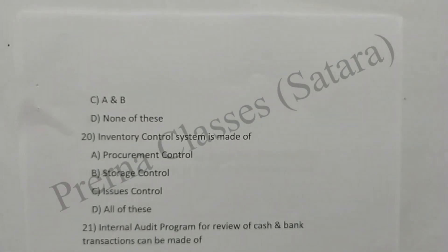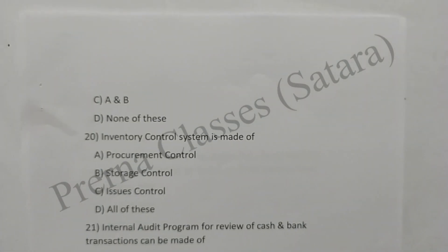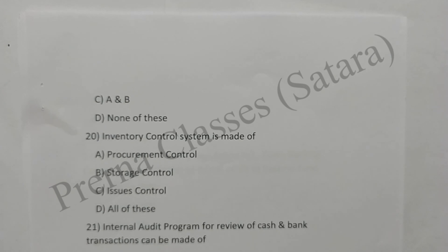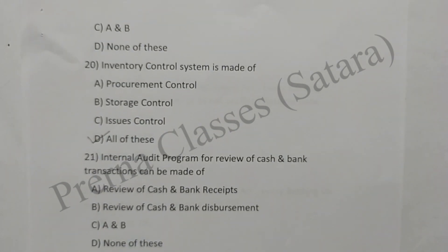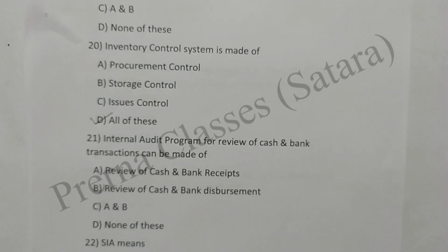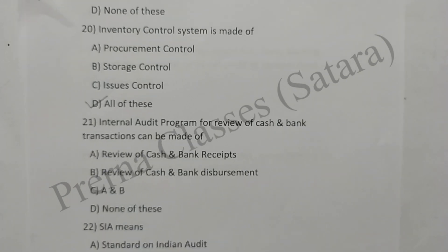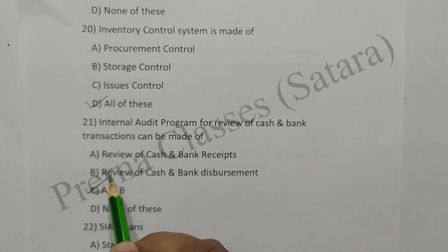Question 20: Inventory control system is made up of procurement control, storage control, control of issues, and all of these. Option D is correct. Question 21: Internal audit program for review of cash and bank transactions includes review of cash and bank receipts, review of cash and bank disbursements — A and B both. Option C is correct.